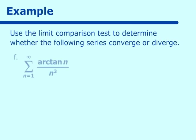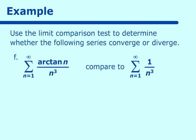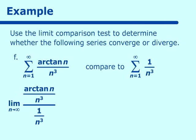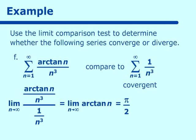What about arctangent of n over n cubed? We know arctangent ranges from negative pi over 2 to pi over 2, so that value is not a big player compared to n cubed going to infinity. We compare this to 1 over n cubed and take the limit as n approaches infinity of (arctan n / n³) over (1/n³), which equals the limit of arctangent of n. As n goes to positive infinity this becomes pi over 2. Since 1 over n cubed is convergent, our series is also convergent.